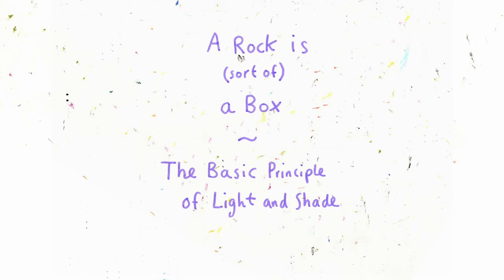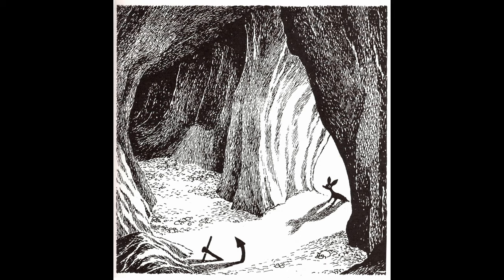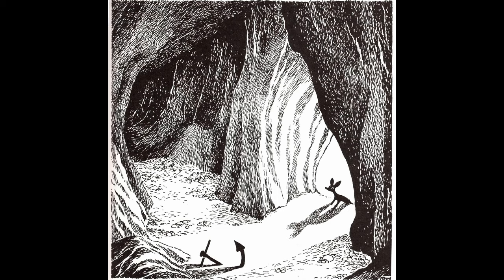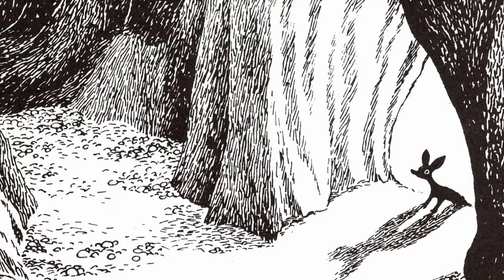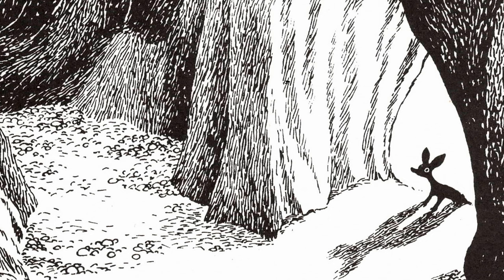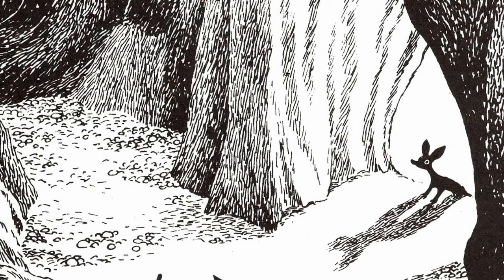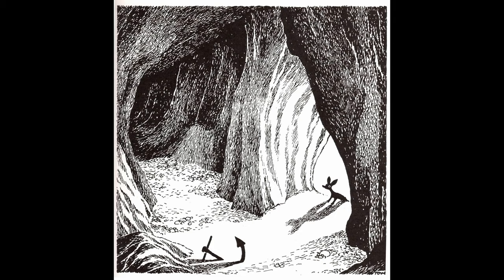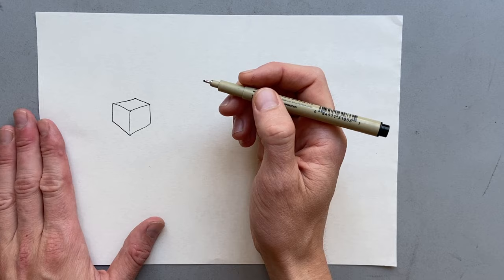A rock is sort of a box. The basic principle of light and shade. In Tove Jansson's work we see a fondness of using black and white against each other creating stark contrasts. Black tone versus white tone is the relationship that gives us a feeling of three dimensions. Tove Jansson achieves this effect by obeying some very basic rules about how light falls on objects.